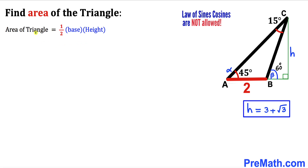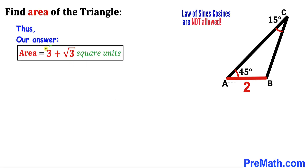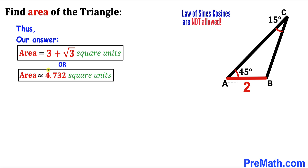Now we calculate the area using: area equals one-half times base times height. Our base is 2 and height H is 3 plus square root of 3. Substituting: area equals (1/2) times 2 times (3 plus square root of 3). The 2 and 1/2 cancel, so the area equals 3 plus square root of 3 square units, which is approximately 4.73 square units.